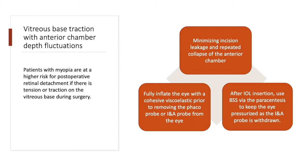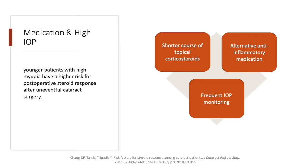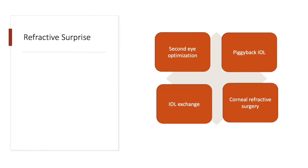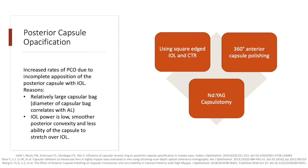Avoid anterior chamber depth fluctuations and traction on the vitreous face, which may predispose to postoperative retinal detachment. This can be achieved by minimizing incision leak and filling the anterior chamber with cohesive viscoelastic prior to removing any instruments. After surgery, high myopic patients have a higher risk of steroid responsiveness and increased intraocular pressure, so they benefit from frequent IOP monitoring or a shorter course of topical steroids. Refractive surprises are common in high myopic patients. One may have the option of optimizing IOL calculations for the second eye. If a refractive surprise occurs, options include IOL exchange, piggyback IOL, or corneal refractive surgery. Posterior capsule opacification rate is higher in high myopes and can be minimized with square-edged IOLs, CTRs, or 360-degree anterior capsule polishing, or dealt with postoperatively by Nd:YAG capsulotomy.